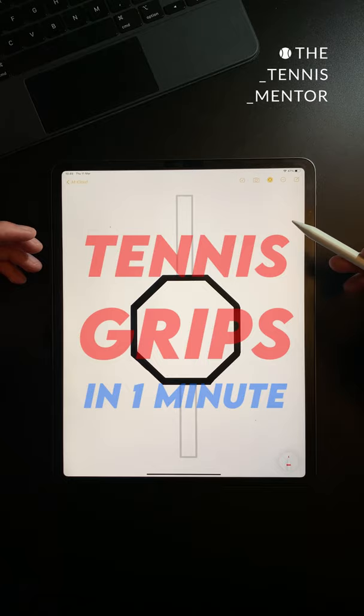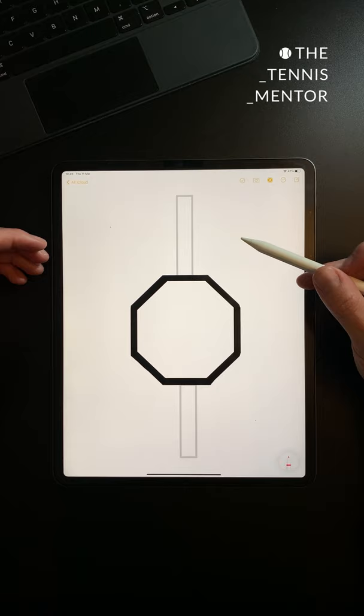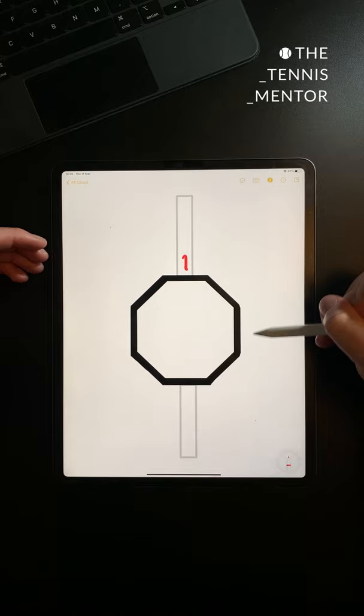We're looking at the butt cap of a racket with the frame of the racket vertical. The easiest way to find a grip is by numbering the bevels from number one on the top bevel and moving around clockwise for right-handed players or anti-clockwise for left-handed players.